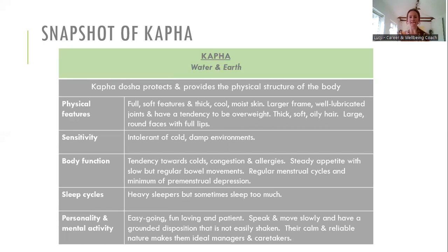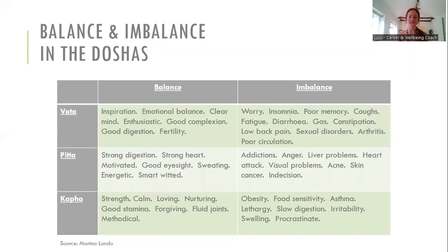Now let's talk about balance and imbalance. For a Vata person, there are certain things that can bring them out of balance — it could be the season, the time of day, what they're eating, or their lifestyle. There are lots of things that bring us out of balance, and what we want to do using Ayurveda is learn how to get back to balance through our lifestyle, nutrition, and thoughts. So when I talk about balance and imbalance, it's not about a 'balanced diet' — it's about what in-balance and out-of-balance looks like for each Dosha type.